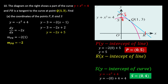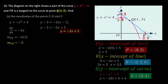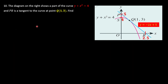We fill in P on the graph and now find R, the x-intercept of the line. Setting y = 0 and solving, we get x = 2.5. We update the data on the graph: R is at x = 2.5. We've now found P, R, and S, so we move on to question b — finding the area of the shaded region.